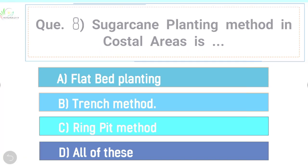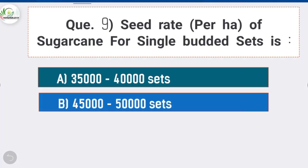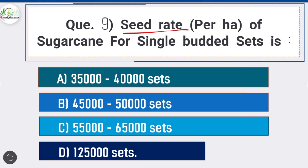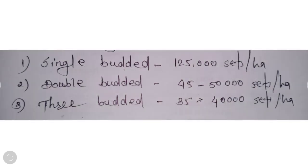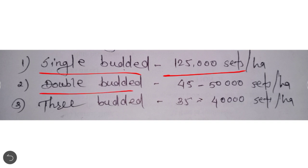Question 9: Seed rate per hectare of sugarcane for single-budded sets is — option D is correct: 1,25,000 sets. Here is a list of set requirements: single-budded sets — 1,25,000 sets per hectare; double-budded sets — 45,000 to 50,000 sets per hectare; three-budded sets — 35,000 to 40,000 sets per hectare.